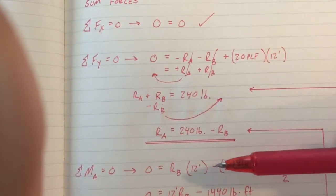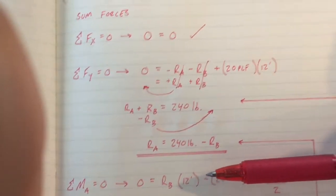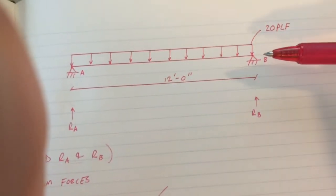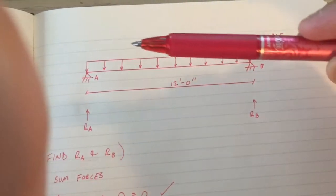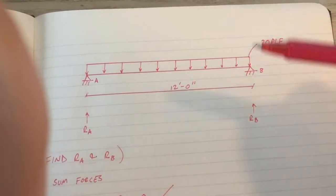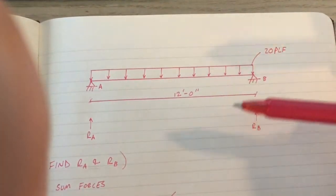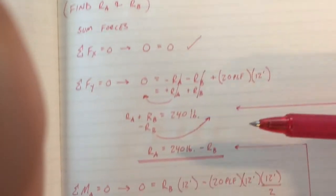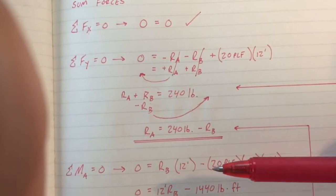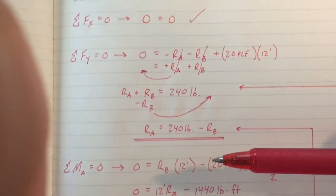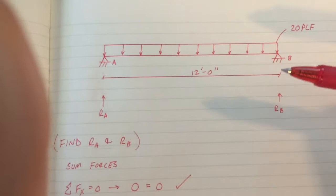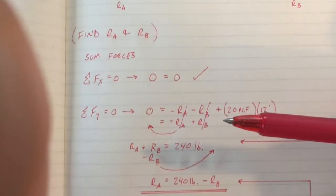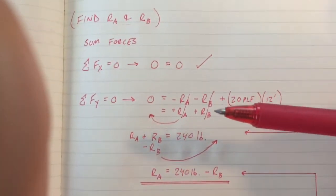That value is going in a counterclockwise direction, which means it's a negative value. Next we have, or excuse me, is a positive value.